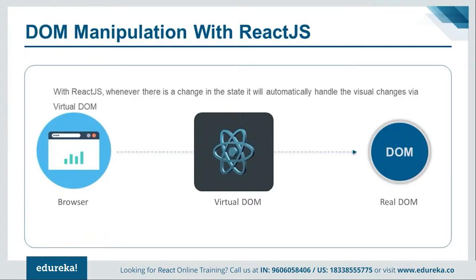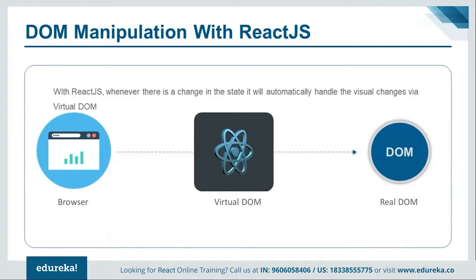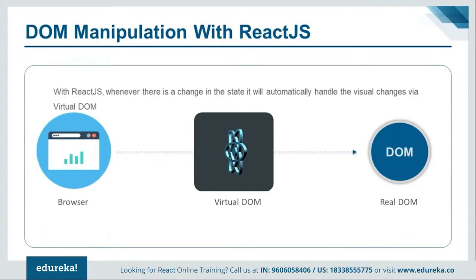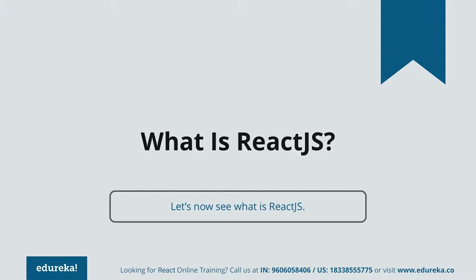Whenever there is a change in the DOM structure, the virtual DOM first tries to understand what that change is and then applies only the differential to the result. This approach had not been present in many other technologies, but React was one of the first to introduce it — and it is now being adopted by many other frameworks including Vue.js. This makes changes happen much faster, improving speed and memory usage.